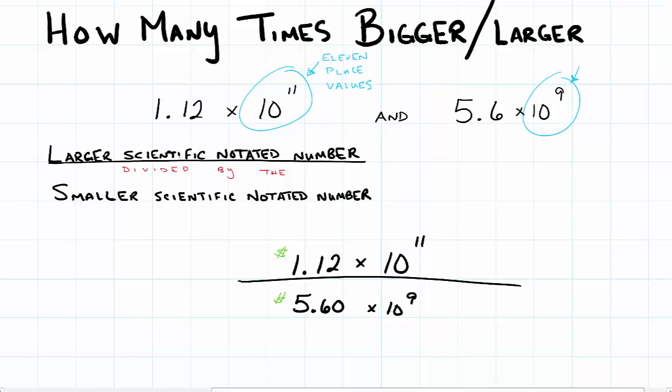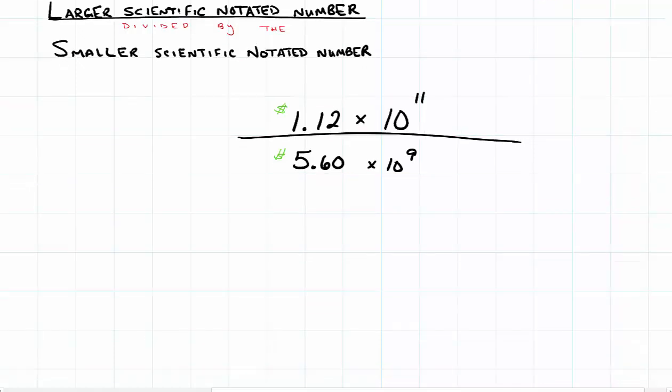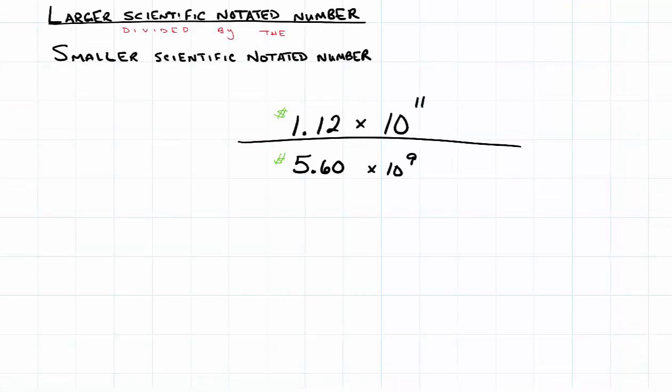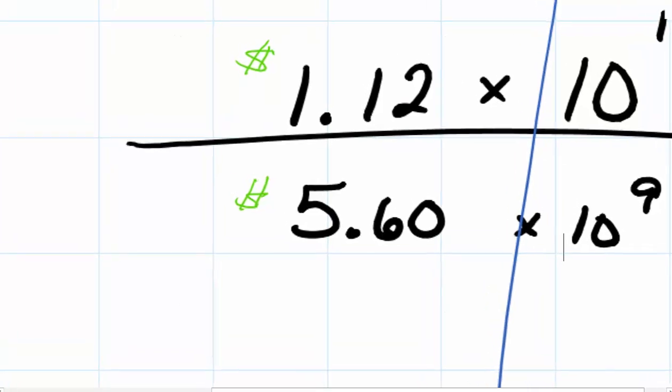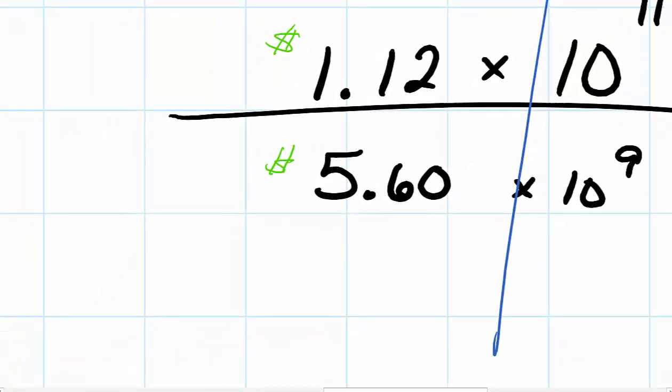So the next step is we have to actually divide our dollar amounts. So I like to take a line and I like to split these right down the middle. And I'm going to only focus in on the $1.12 divided by $5.60. Now, most of the time you'll be able to use a calculator to do this. They won't ask you to do this if you don't have use of a calculator. So I'm going to punch into my calculator $1.12, hit my divided by key, and divide that by $5.60.